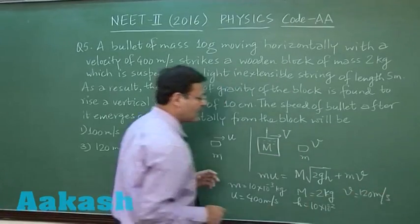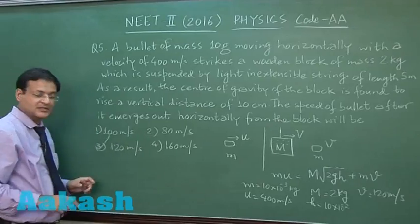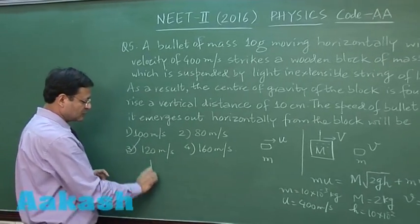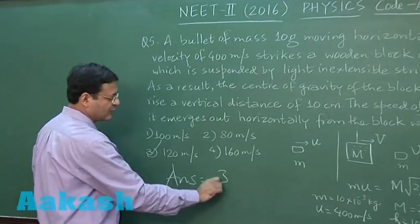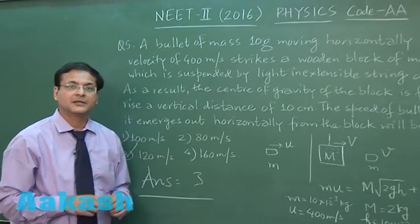So you will have to mark the answer 3 for this. This is 120 meters per second. So I will be marking the answer 3 for this question number 5. Now, let us switch over to the next question, that is question 6.